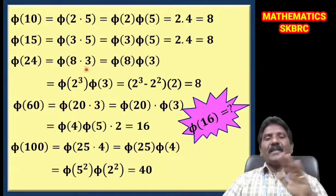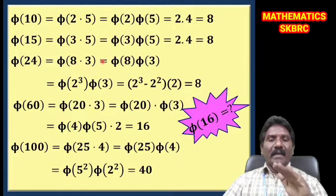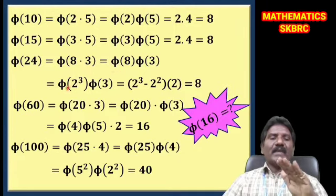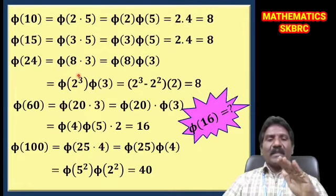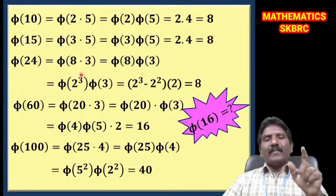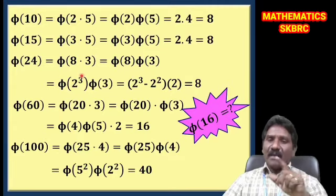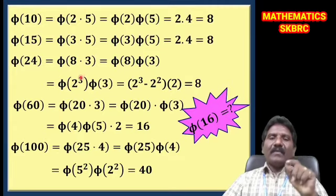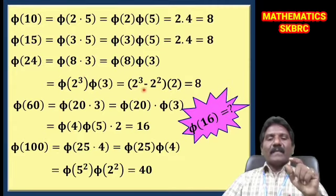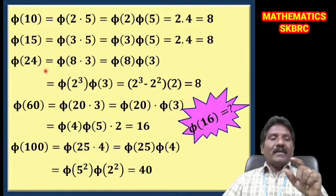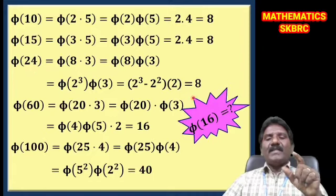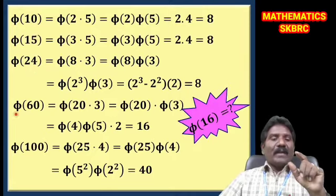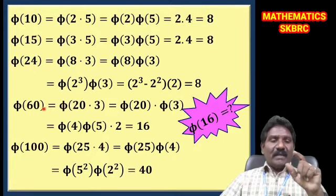φ(24) = φ(8 × 3). Since 8 and 3 are relatively prime, φ(24) = φ(8)·φ(3) = φ(2³)·φ(3). φ(2³) = 2³ − 2² = 4, and φ(3) = 3 − 1 = 2. So φ(24) = 4 × 2 = 8. A cyclic group of order 24 has 8 generators.